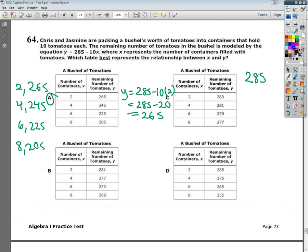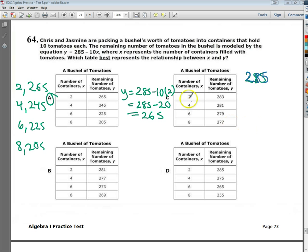And from there, all they're doing is taking away a certain number of containers every time. Now, 2 containers would be 20 tomatoes. So, from 2 containers, I just take 20 away, and I get 265.